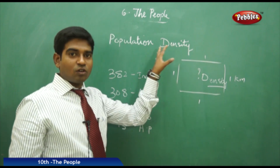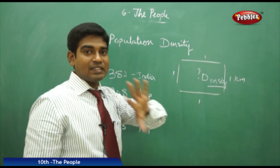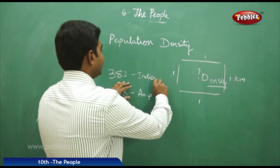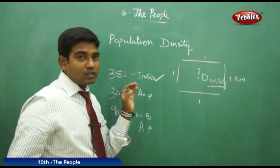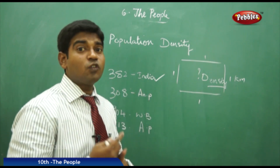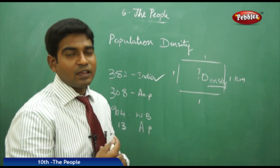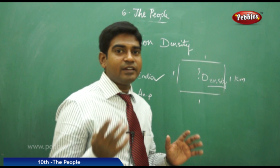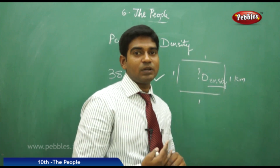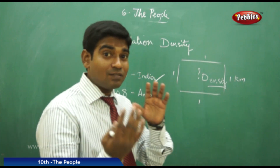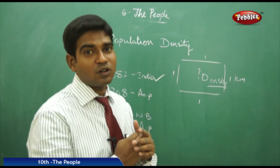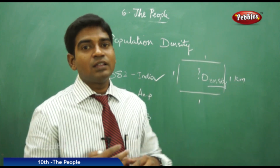According to the 2011 census, the density of India is 382 — meaning 382 people live in one square kilometer. However, this doesn't mean Jammu and Kashmir or Kanyakumari or the Thar Desert region all have the same number — this is only an average.